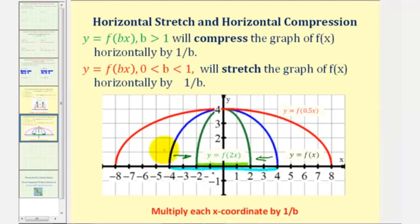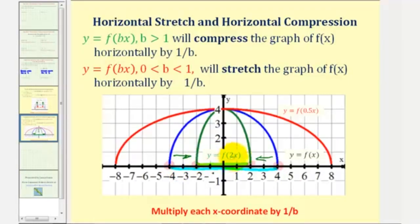Let's talk about why that makes sense. On the parent function, the points where f of four equals zero and f of negative four equals zero correspond to x equals two and x equals negative two on f of two x, because the input is two times x. To find points on f of bx from the parent function f of x, we multiply each x coordinate of f of x by one over b, not b. So here b is two, and we multiply each x coordinate by one half. Because of this, when b is greater than one, f of bx will compress the graph of f of x horizontally by one over b — so the green graph is horizontally compressed by one half.